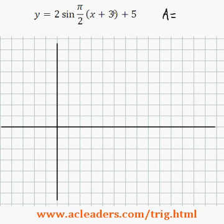The value of a is going to be 2. b is going to be pi over 2. That's going to give us the period. The phase shift is negative 3. And the vertical displacement is positive 5.